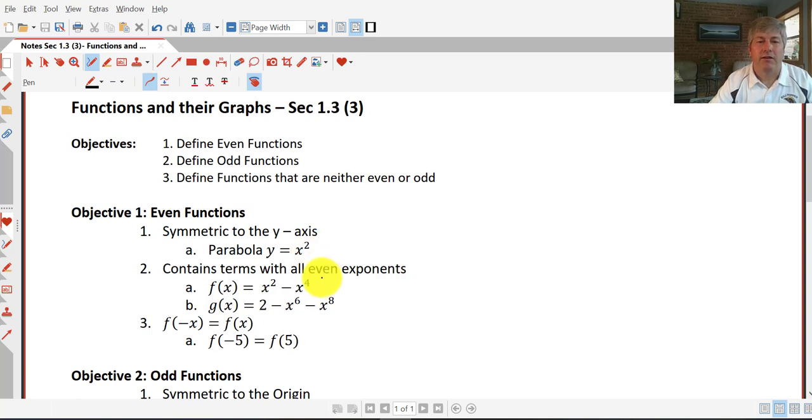Also, even functions contain terms with all even exponents, like my examples here, x squared minus x to the fourth, even though these aren't in decreasing order of x, or g of x equals negative x to the sixth minus x to the eighth plus two.